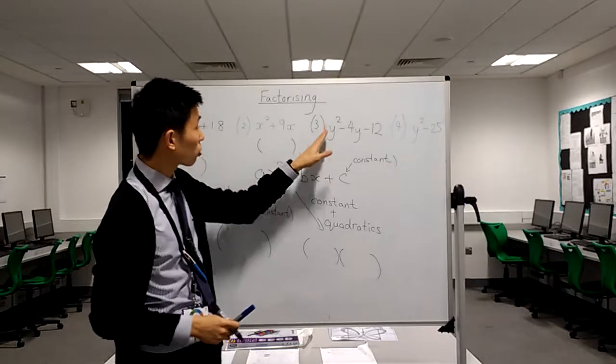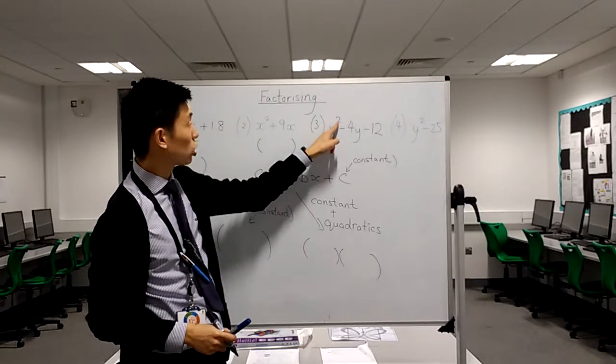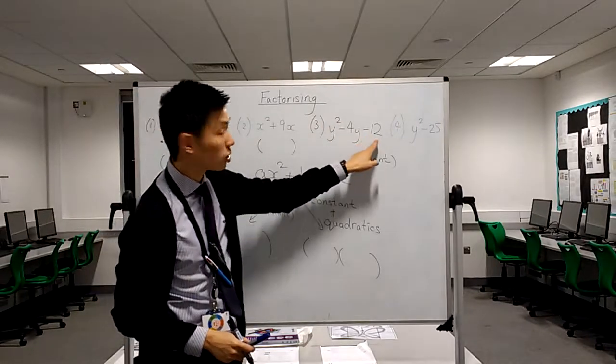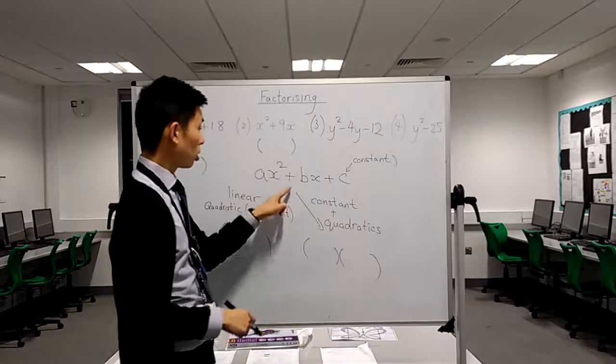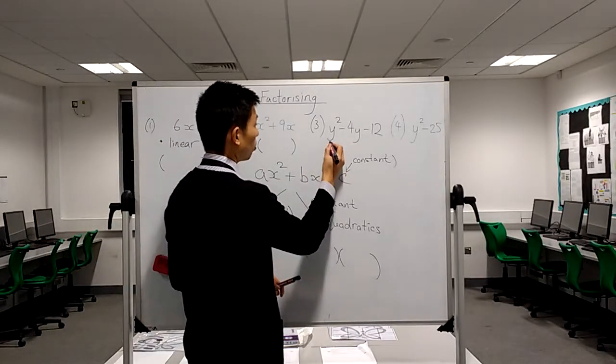This one is quadratic, shown by the square. Has it got a constant? Yes. So, it is a double bracket.